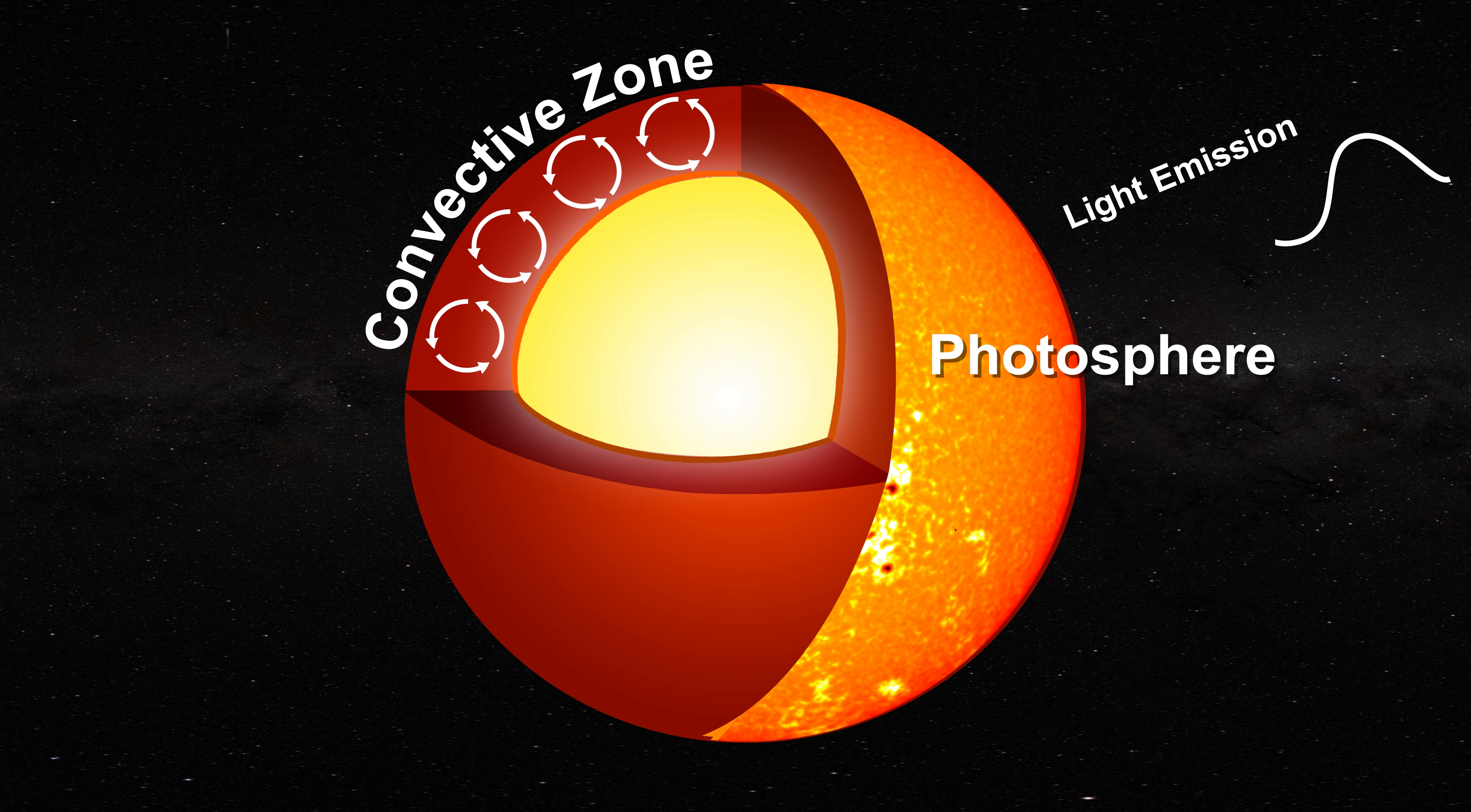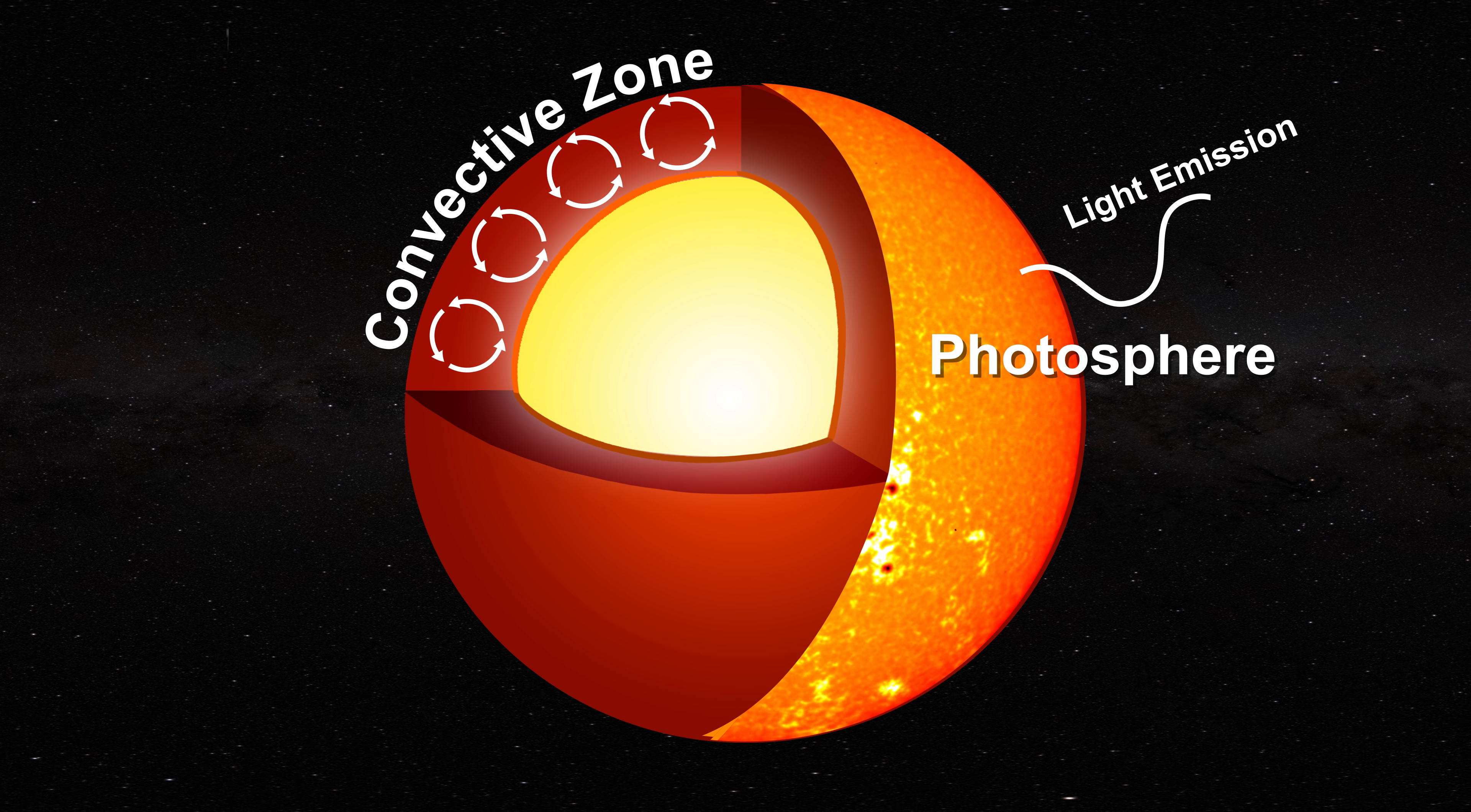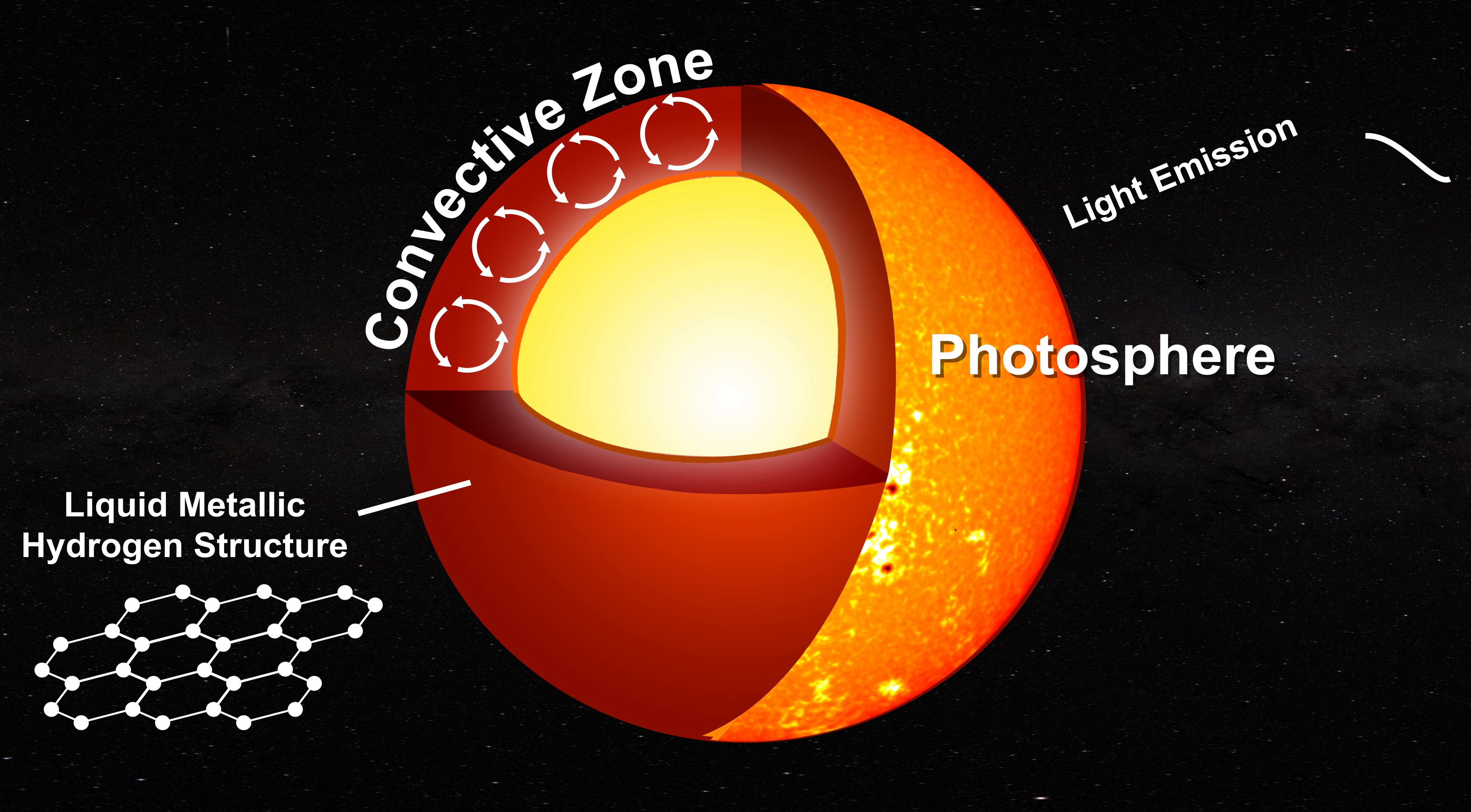Unlike the body centered cubic structure of the core this region of the Sun is comprised of type 2 metallic hydrogen which is a compressed and therefore more metallic hexagonal planar structure.